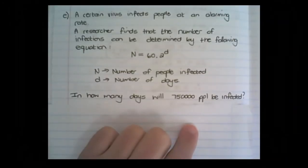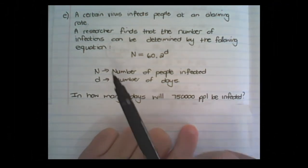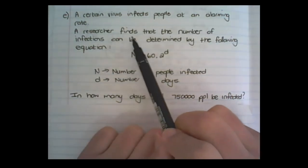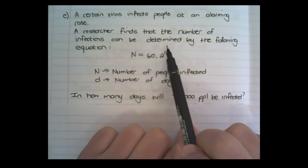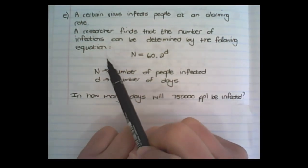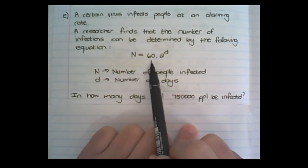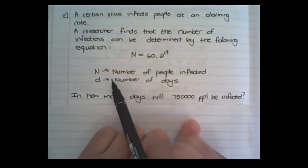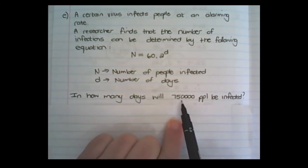Logs are normally used in practical applications, in the real world. And let's just take this as an example. A certain virus infects people at an alarming rate. A researcher finds that the number of infections can be determined by the following equation. n is equal to 60 times 2 to the power of d. Where n represents the number of people infected, and d the number of days. In how many days will 750,000 people be infected?